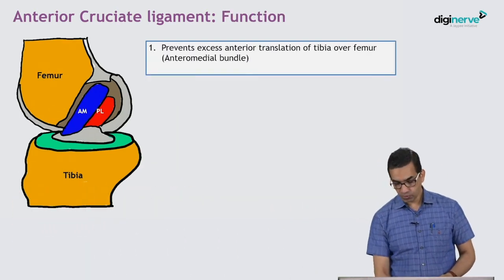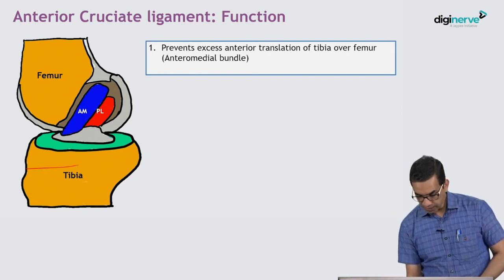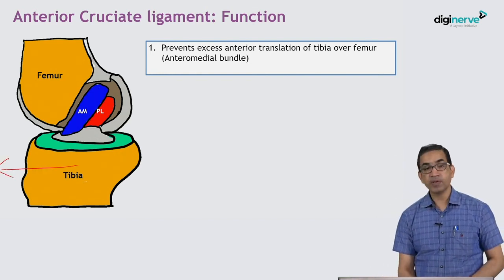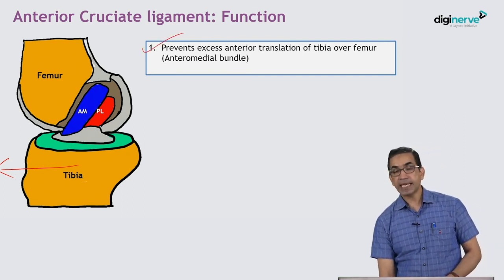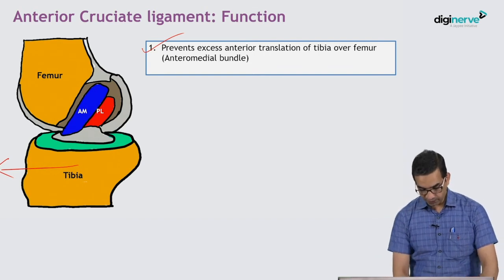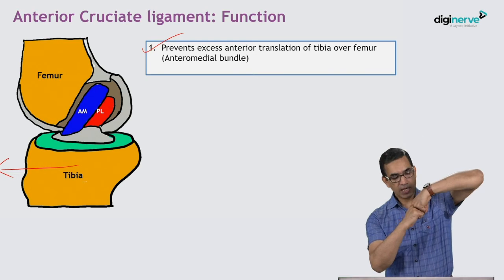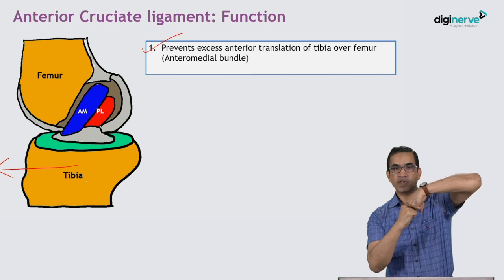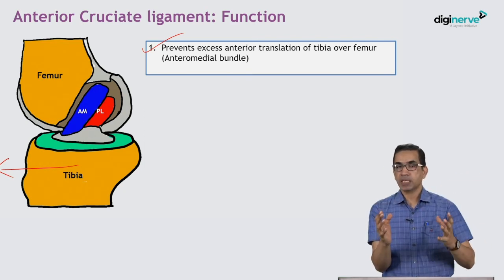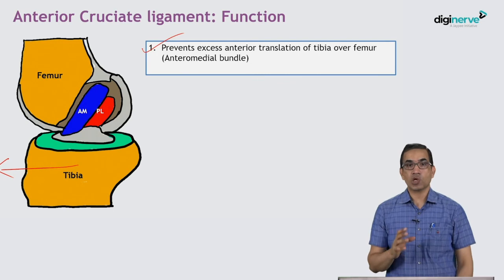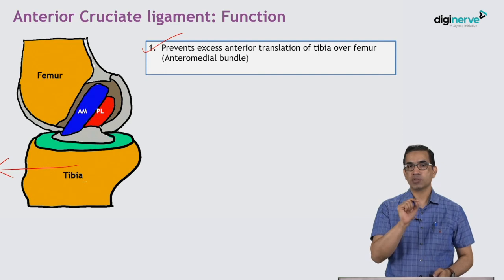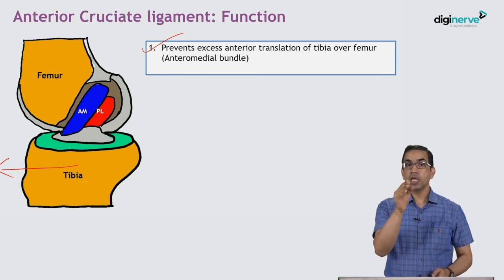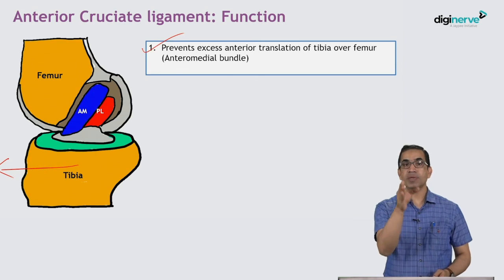The function of the ACL: if you pull the tibia forward, the ligament becomes taut. The ACL prevents excess anterior translation of the tibia. If you fix the femur and pull the tibia forward, it moves a little but not beyond a point because the ACL becomes taut. This forms the basis of the anterior drawer test — if the ACL is torn, the tibia moves more than normally expected.